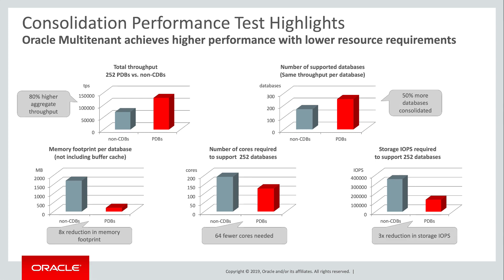This fifth test showed a 3x reduction in IOPS. Technically, this is due to piggybacking of writes during log file syncs. But trust me, it's a good thing. IOPS are expensive. Reductions of this scale are a big deal.